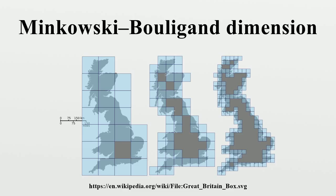Suppose that N is the number of boxes of side-length epsilon required to cover the set. Then the box-counting dimension is defined as, roughly speaking, the dimension is the exponent D such that N ~ epsilon^(-D), which is what one would expect in the trivial case where S is a smooth space of integer dimension D.